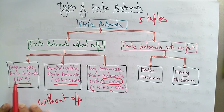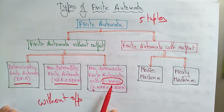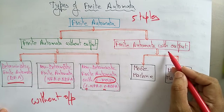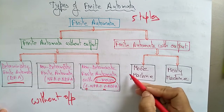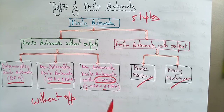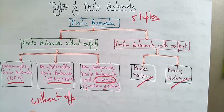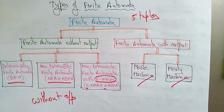Coming to finite automata with output, the examples are the Moore machine and the Mealy machine. In the coming videos we are going to learn about DFA, NDFA, epsilon moves with NDFA, Moore machine, and Mealy machine with examples. Thank you.